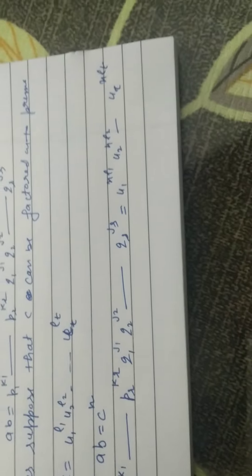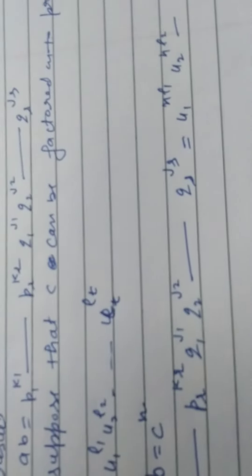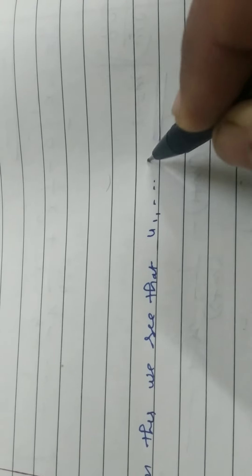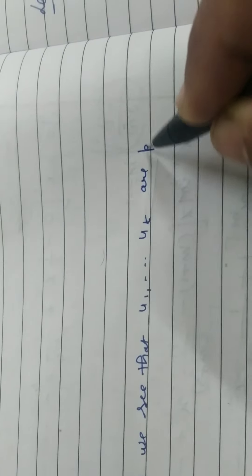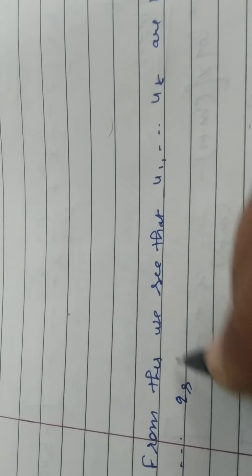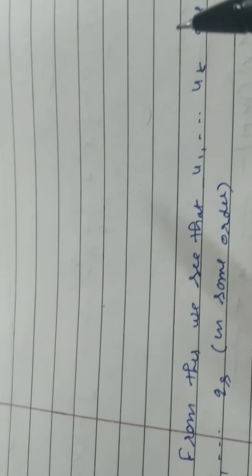UIs भी primes हैं, और PI और QIs भी prime हैं. तो क्या होगा? From this, we see that U1 to UT are nothing other than P1 to PR, or Q1 to QS, in some order. हो सकता है, इनका order change हो. कोई चीज़ पहले आ जाए, कोई चीज़ बाद में आएगी.